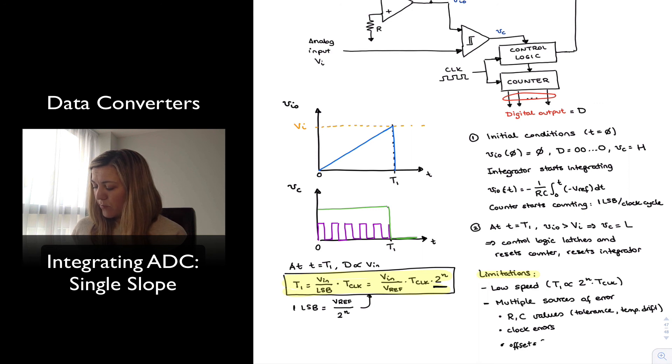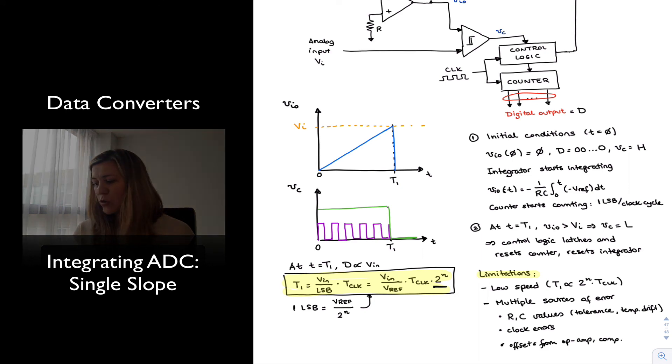And then other sources of errors obviously will be the offset errors from the integrator op-amp, from the comparator, and from the sample and hold circuit, if we are using a sample and hold circuit. I mentioned that sometimes in this type of circuits, if the input is varying very slowly, we tend not to use a sample and hold circuit. So in essence, we are just assuming that the input is changing very little within a number of clock cycles. But if we use a sample and hold circuit, then that will be another potential source of offset from the sample and hold circuit.